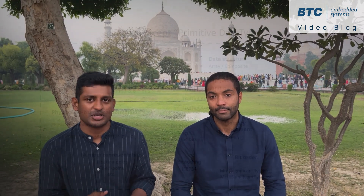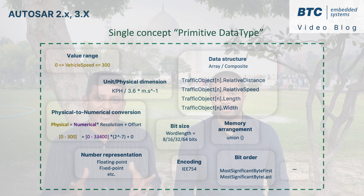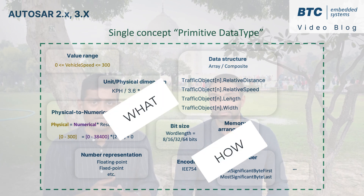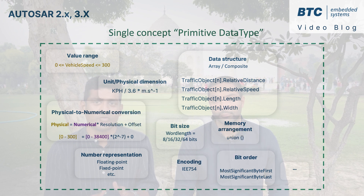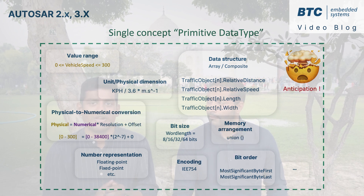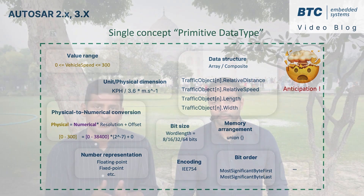Before AutoZar 4.0, there was a single concept of primitive data type. It tried to define everything, including what the data is and how to implement the data in the code. This required a lot of anticipation while working on the higher architecture level and had some downsides. The system engineer had to prevent naming conflicts between the data types and, when needed, an implementation change in the code would require the higher architecture to be updated.